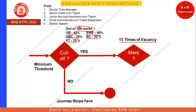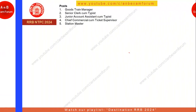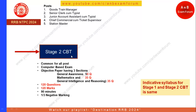Stage 2 CBT is similar to Stage 1; the only difference is the number of questions. General Awareness increases from 40 to 50 questions, Mathematics from 30 to 35, and General Intelligence and Reasoning from 30 to 35. Total questions are now 120, for 120 marks, since each question carries one mark. The time duration remains the same at 90 minutes, but you now have 20 more questions — increasing the competition level among top merit candidates. Negative marking is still one-third.